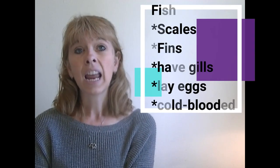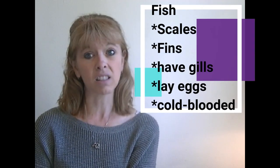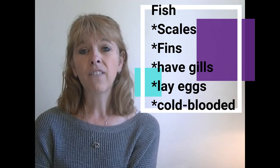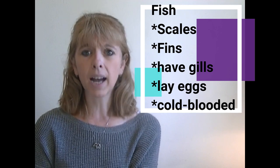And the last type of animal that we're going to be talking about today and categorizing are fish. Fish have scales and fins and gills, not lungs. And fish lay eggs. And they are cold blooded.